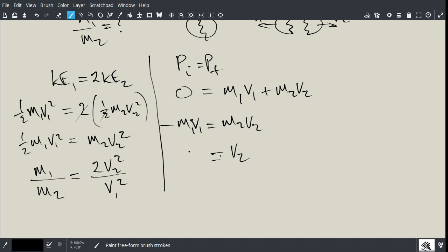So V2 is over here. What is it? Well, it's going to equal negative M1 V1 divided by M2, because you just take the M2 on the bottom on the other side, and so now we have solved for V2.